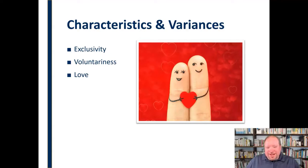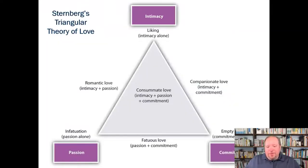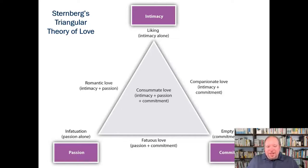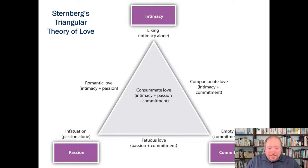We also see within our culture different types of love that exist in relationships. Sternberg's triangular theory of love is one popular theory for identifying differences in the nature of love. In this theory, you've got three base areas: intimacy, commitment, and passion. Intimacy alone just means that you like the person; commitment means you're committed to that person; and passion means you have an infatuation with the person.